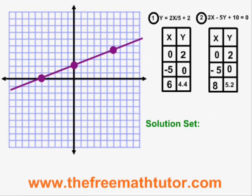To graph equation 2, I will put points at 0, 2, negative 5, 0, and 8, 5.2. And then I will draw a line through those points.